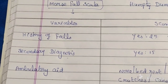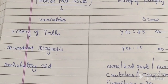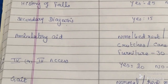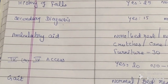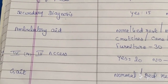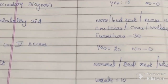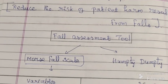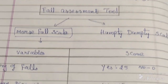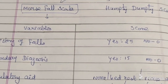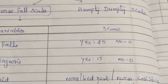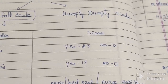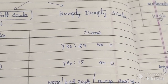The first variable is history of falls. If your patient has any history of falls, you give a score of 25. If not, zero. The second variable is secondary diagnosis.